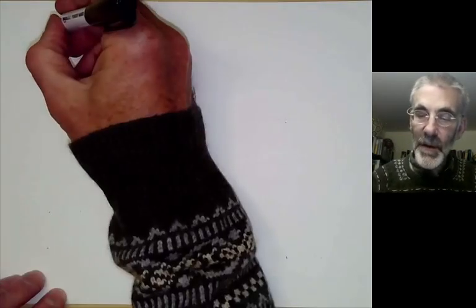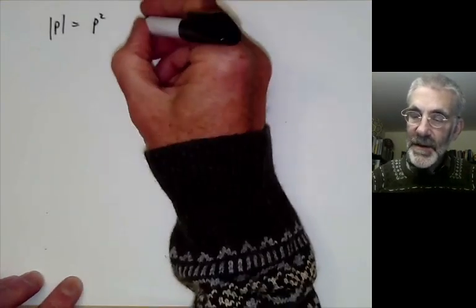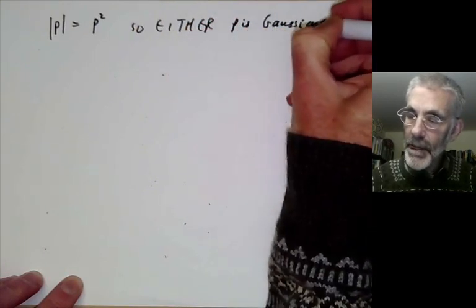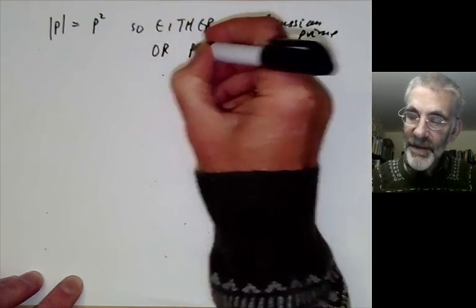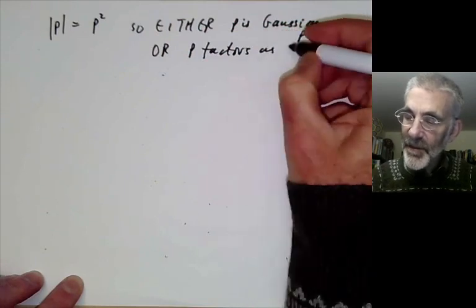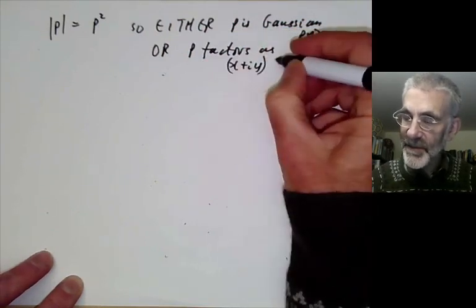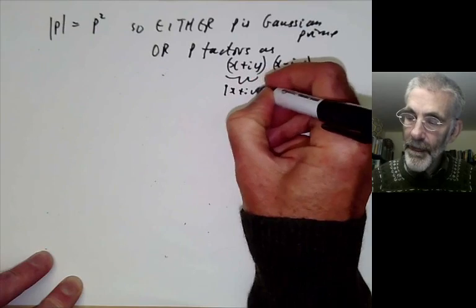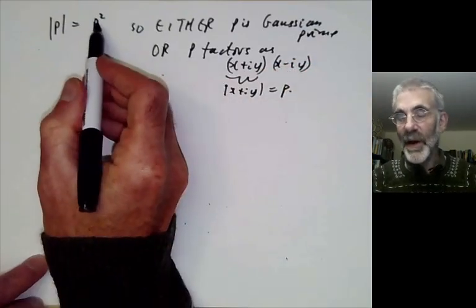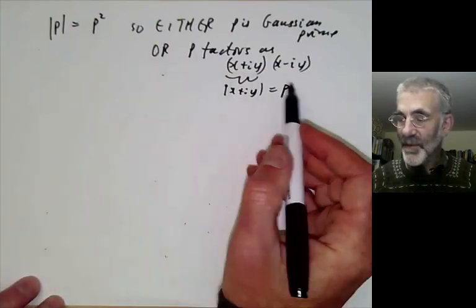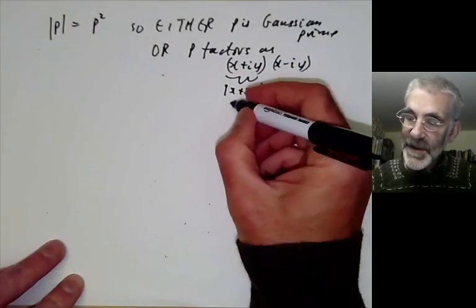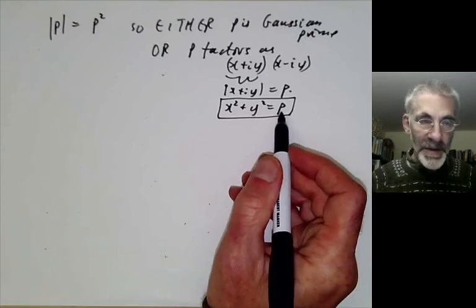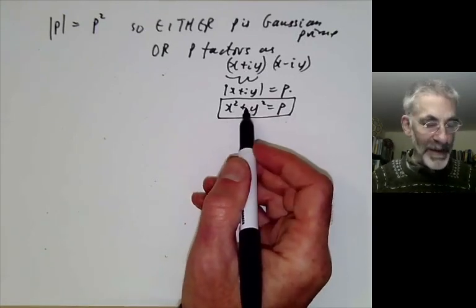First of all, the absolute value of p is p squared. So either p is a Gaussian prime, or p factors as a product of two Gaussian primes: (x plus iy)(x minus iy), which must have absolute value p. The only way to write p squared as a product of two numbers bigger than one is p squared equals p times p, which implies x squared plus y squared equals p. So factoring p as a Gaussian integer is the same as trying to write p as the sum of two squares.